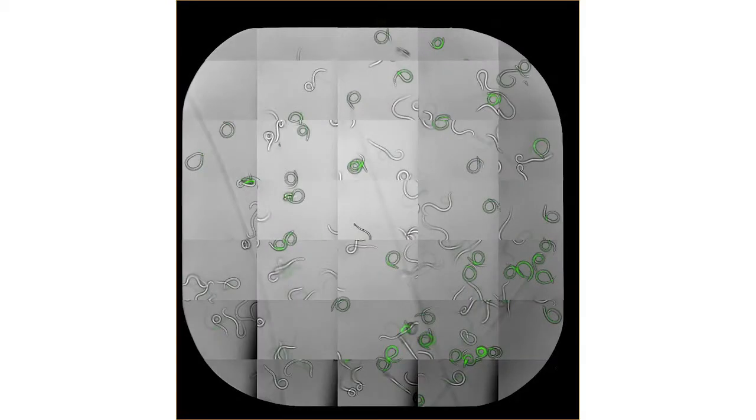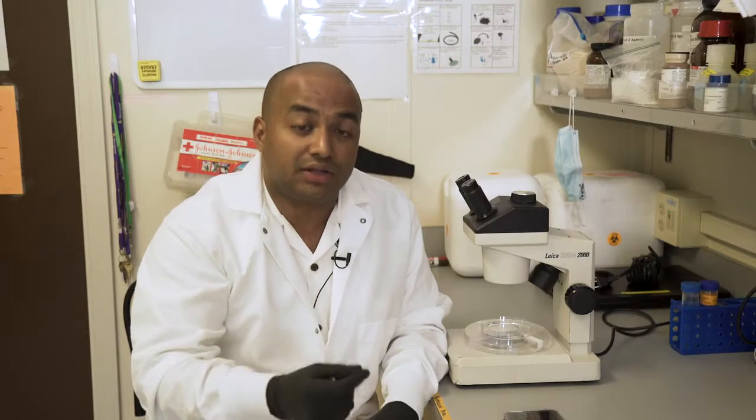We can test different drugs including other chemical compounds like bleach or iodine or potassium permanganate, if they have an effect on the larva and if that kills the larva.